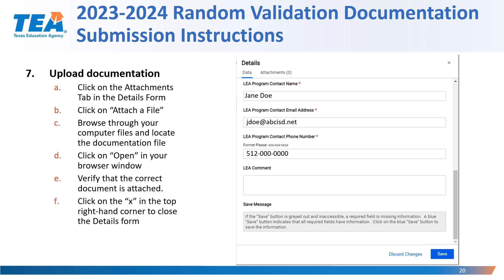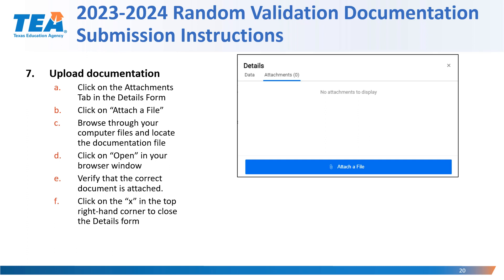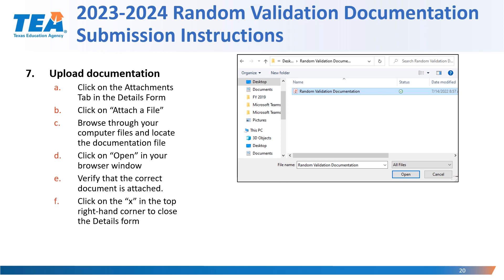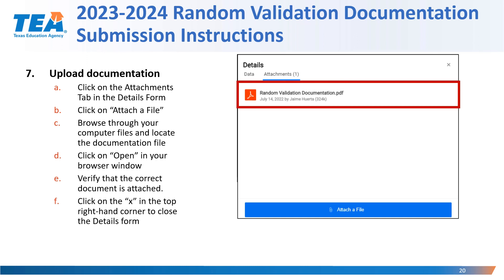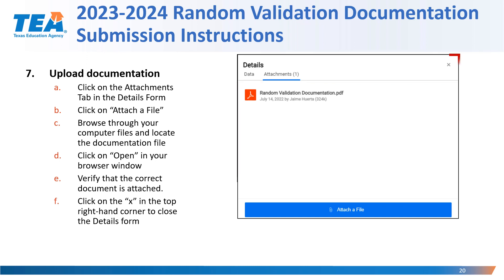The next step in the process is uploading your documentation. First, click on the attachments tab in the details data form. Then the attach a file window will open — click on attach a file. The computer browser screen will open and you can browse through your computer files and locate the documentation file. Verify that the file name is the actual file you want to attach to the WorkApp system. Once you click on open, the file will automatically be attached. You will want to verify that the correct document is attached, then click on the X in the top right-hand corner to close the details form.